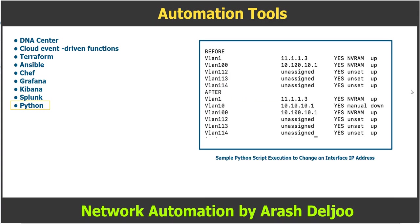This figure shows a sample execution of the script. Here you can see that before the configuration, we did not have interface VLAN 10. After the configuration, we can see that we have VLAN 10 with the IP address 10.10.10.1.